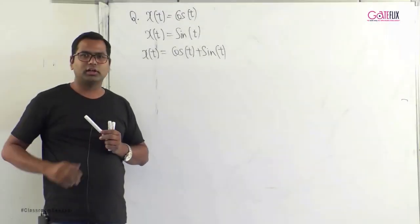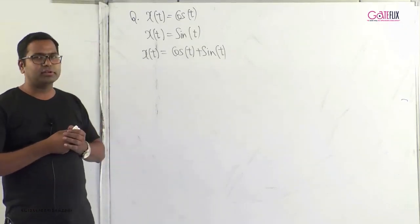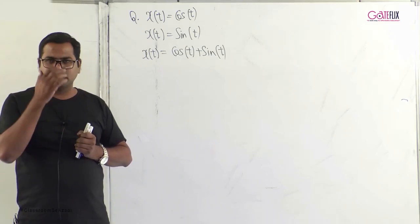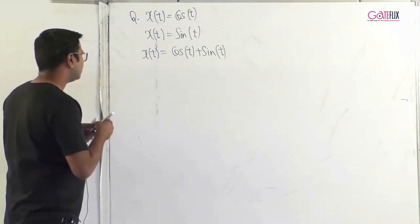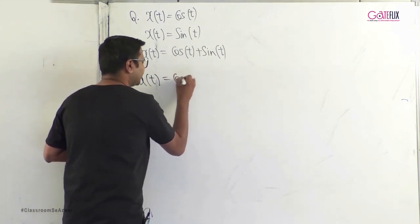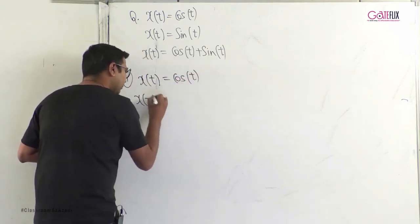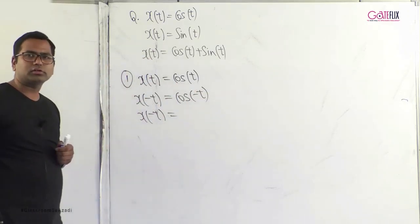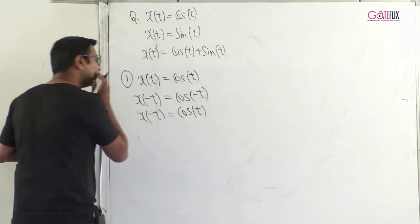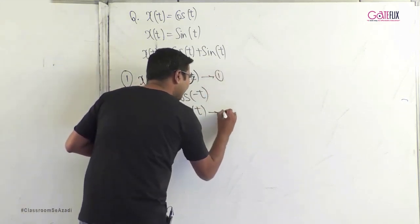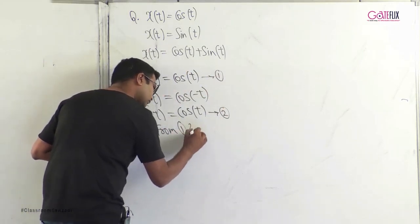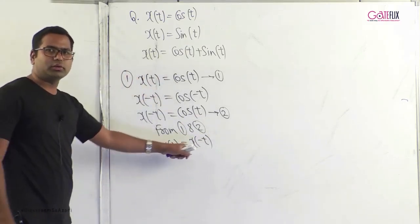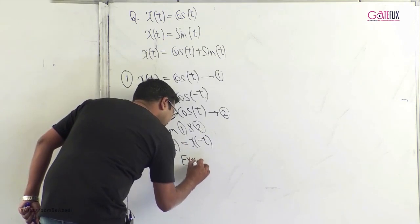Even and odd signals can also be determined analytically. First example: x(t) = cos(t). We find x(−t) = cos(−t) = cos(t), since cos(−θ) = cos(θ). From equations 1 and 2, x(t) = x(−t), so cos(t) is an even signal.